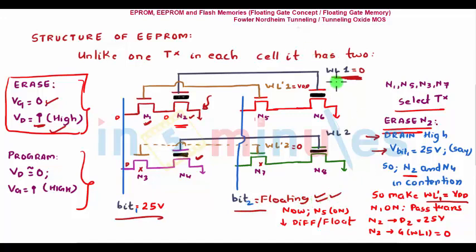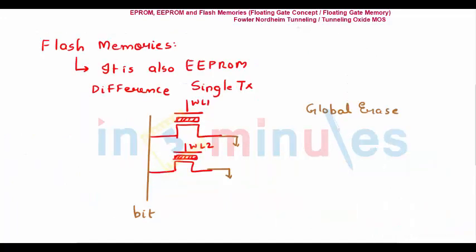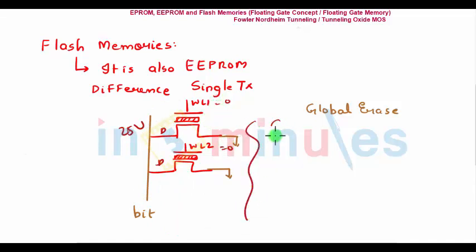Remember, all other bit lines must be floating so nothing happens in other columns — no erase, no programming — ensuring operation at a specific location. That is the concept of EEPROM. Flash is also a type of EEPROM, but the difference is it uses a single transistor — no select transistor. So if 25 volts is given at the drain, all transistors in the column with gate voltage zero would be erased simultaneously — that is a global erase. In the next clip we will see NOR-based and NAND-based flash memories.